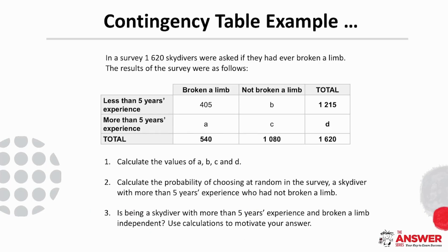In a survey, 1,620 skydivers were asked if they had ever broken a limb. The results are given in a table showing whether they had or hadn't broken a limb and how many years' experience they had. There are some gaps in the information provided. Question 1 asks us to calculate the values of A, B, C, and D. Question 2 asks for the probability of choosing a skydiver with more than 5 years' experience who had not broken a limb. Question 3 asks whether being a skydiver with more than 5 years' experience and having broken a limb are independent events.